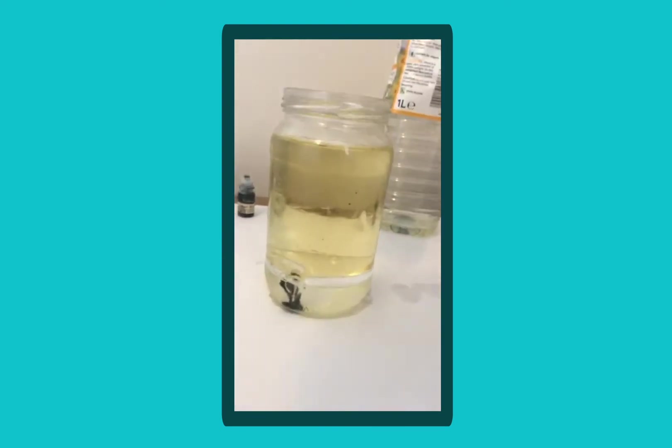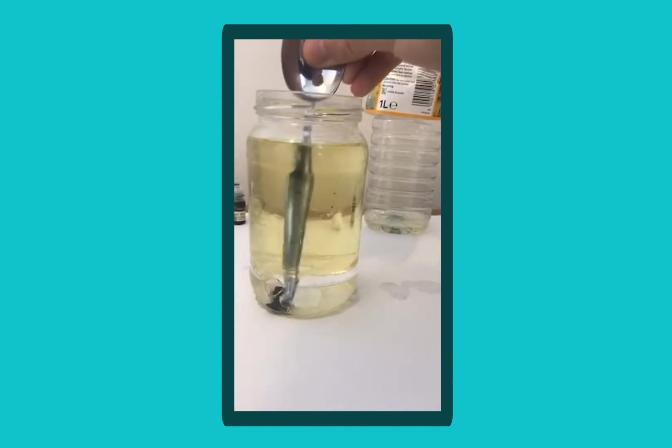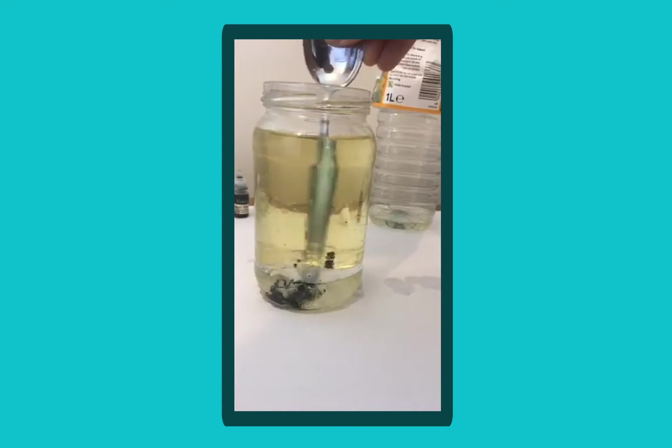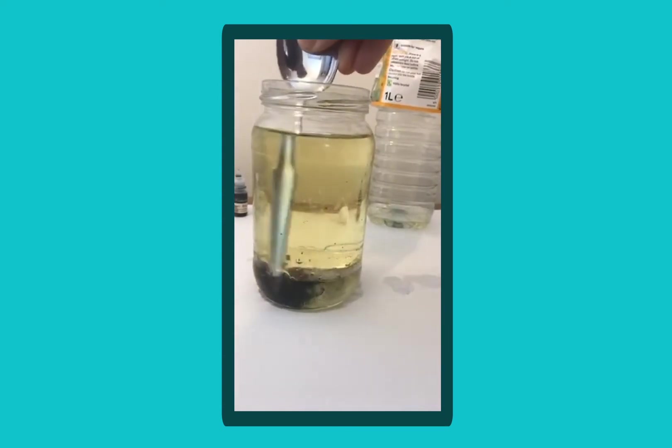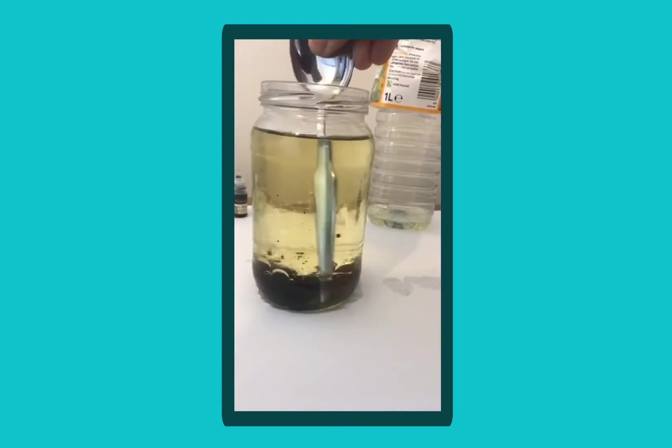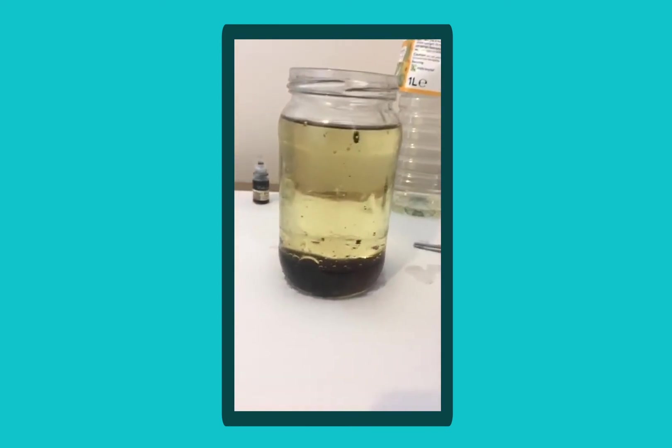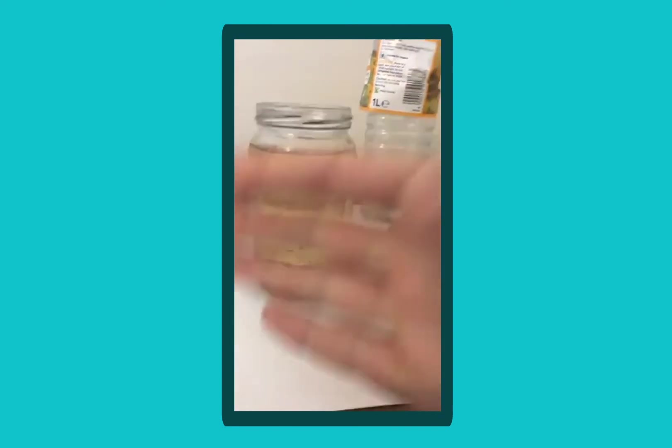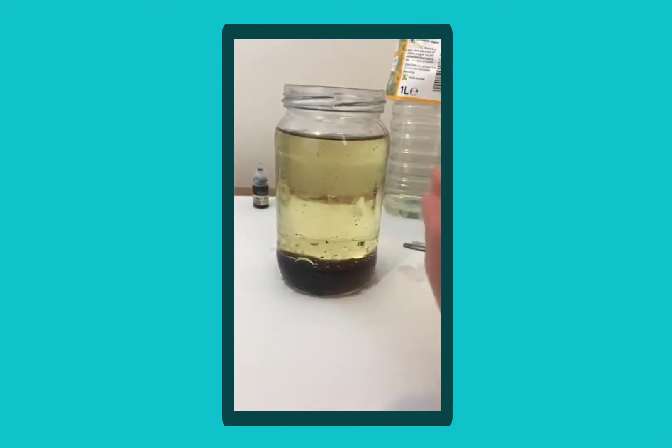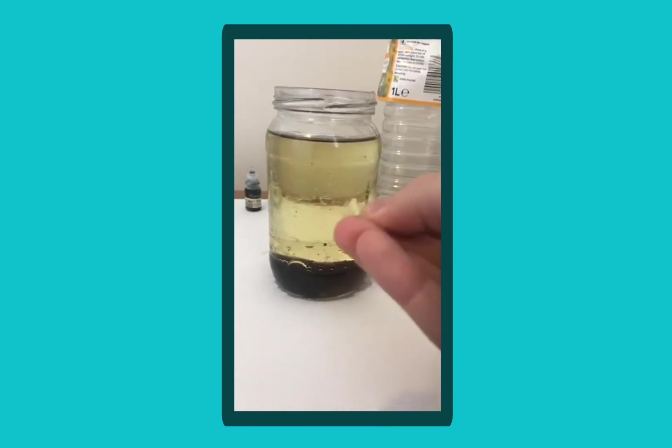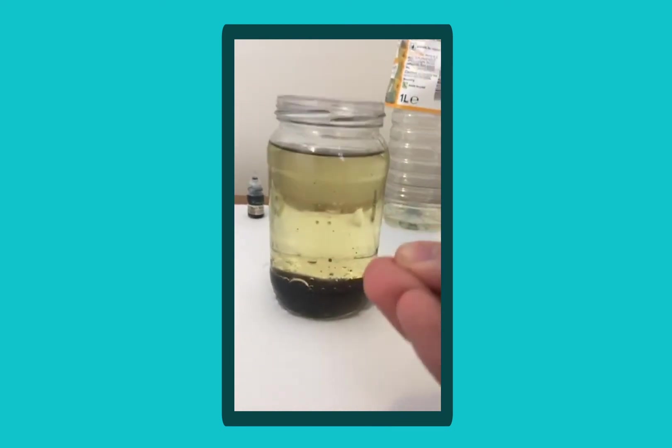And what you might want to do is just give it a stir so that food colouring, that dye mixes in with the water. I'd recommend stirring rather than shaking because shaking it will create a lot more bubbles and it may just sort of cloud the effects of the lava lamp as it goes ahead.